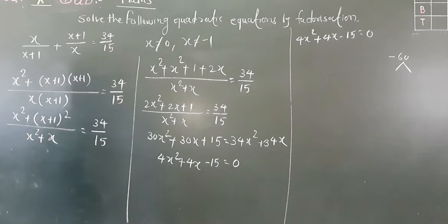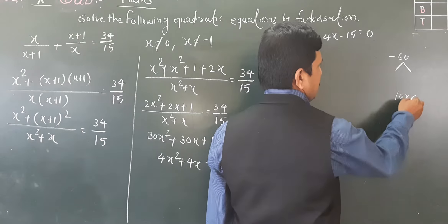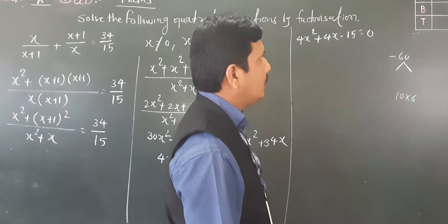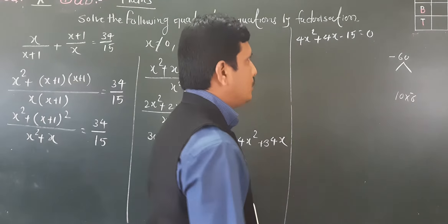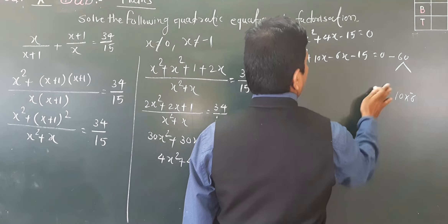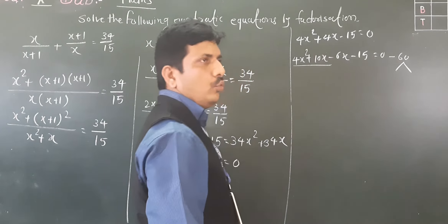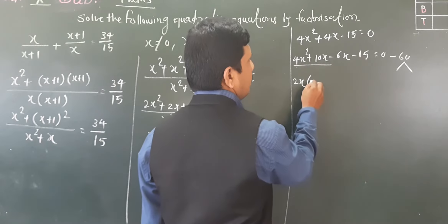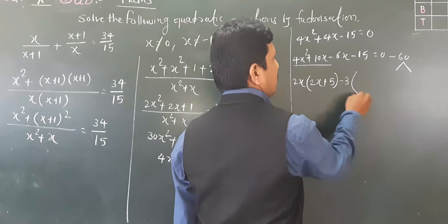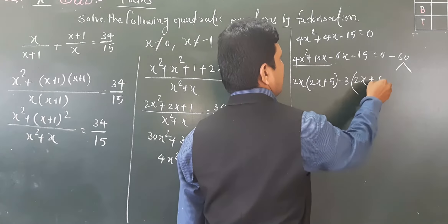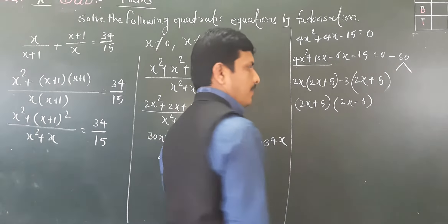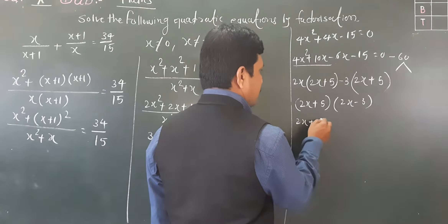The sum should come to plus 4. We can use 10 and minus 6: 10 × (−6) = −60 and 10 + (−6) = 4. So we split: 4x² + 10x − 6x − 15 = 0. Taking 2x common from the first two terms gives 2x(2x + 5), and taking minus 3 common from the last two gives minus 3(2x + 5).